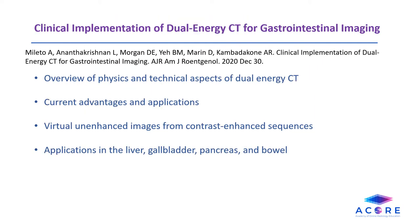This article from AJR gives an overview of dual-energy CT and how it can be used to evaluate the abdomen. It begins with a discussion of the physics and technical aspects of dual-energy CT, followed by current advantages and applications. For example, the article discusses the ability to create virtually unenhanced images from contrast-enhanced sequences. This helps to provide additional information when a non-contrast phase is needed to establish a diagnosis.